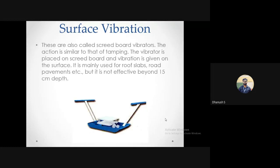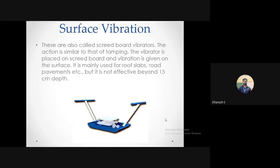The last type is a surface vibrator, used for elements with lesser thickness — slabs and pavements where depth does not exceed 15 to 20 cm. This uses the same unbalanced mass concept: a plate connected to springs and two handles; moving the handles causes the masses balanced on springs to apply compactive energy on the surface. It can be used for pavements, pathways, and small surface applications.